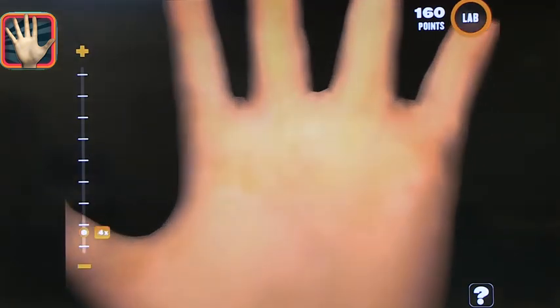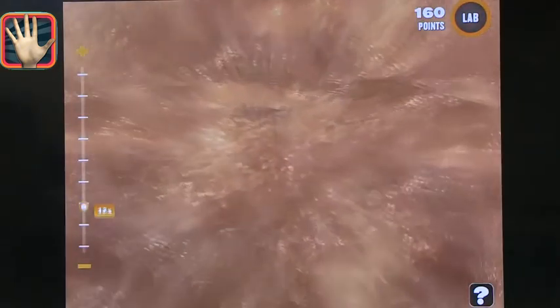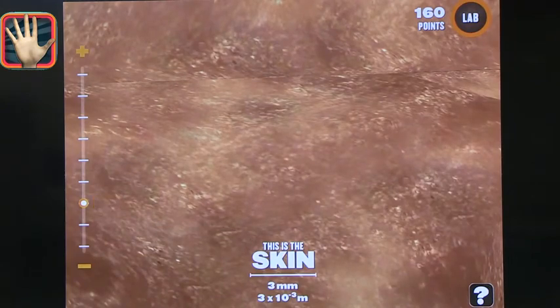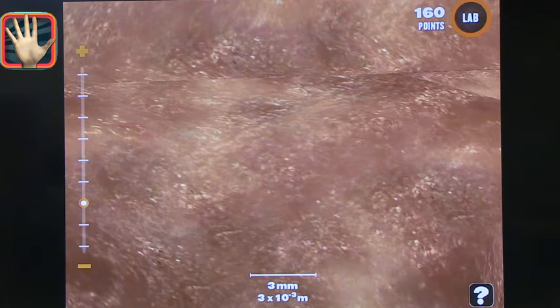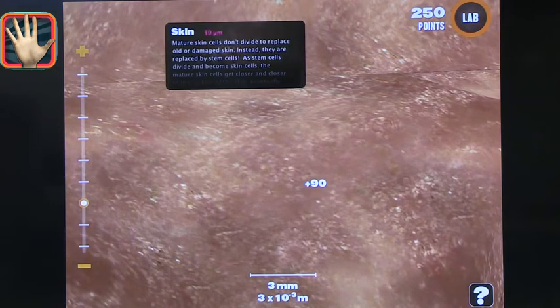And then as you start magnifying, you start seeing different parts. So right now we're seeing the layers of skin and we're seeing them very up close and we get at the bottom exactly what size is it. So this is three millimeters and it has also the powers of 10.